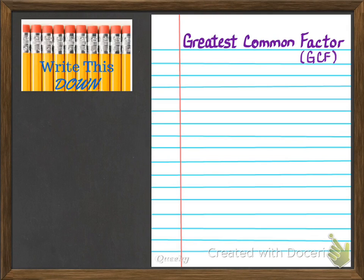So let's begin. You see in the top left corner of the screen where it says write this down. On your paper I would like for you to go ahead and title it greatest common factor, GCF in parentheses.